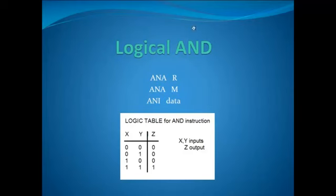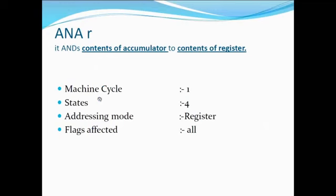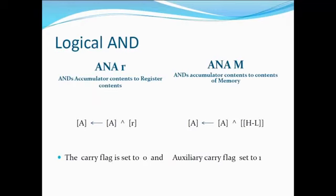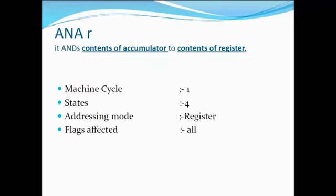This is the truth table of logical AND. The logical AND instruction is of two types: ANAR and ANAM. In ANAR, it ANDs the contents of the accumulator with the contents of a register. It has one machine cycle, four states, and register addressing mode, and all flags are affected.